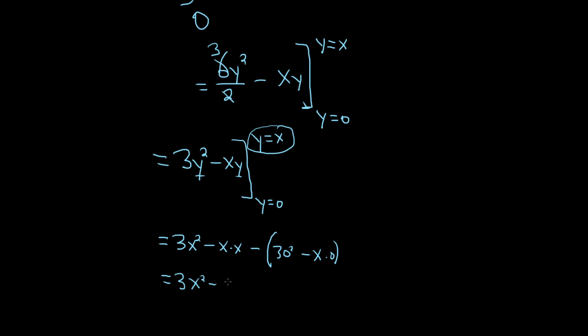x times x is x squared, so minus x squared minus 0. There's really a 1 here, so 3x squared minus 1x squared is 2x squared. And that would be the final answer. I hope this video has been helpful.